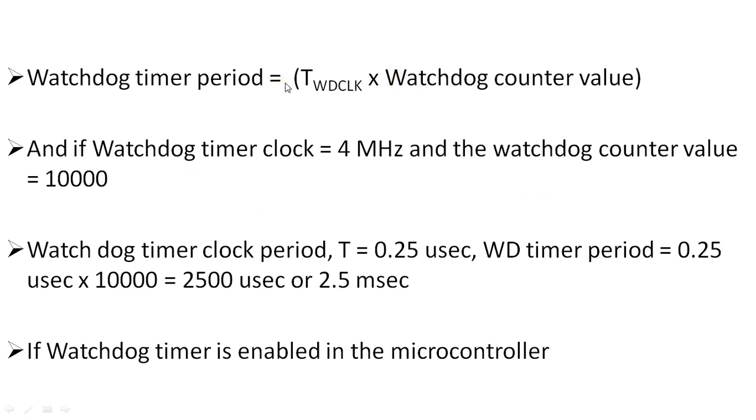Here you can consider a simple formula for calculating the watchdog timer period, which is given by the time period of the watchdog clock times the watchdog counter value. If you have some pre-scaler value, that should also be multiplied.